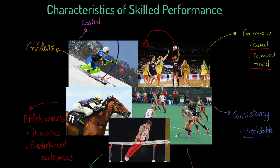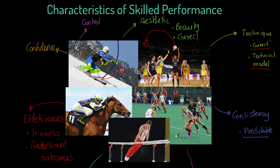This one might be less obvious: the performance must be aesthetic. What does that word mean? It could mean beauty — the performance looks good. We can see from the netball player, maybe the defender, that there's a certain kind of prowess and beauty to the performance. Again with the skier, again with the gymnast — that perfect straight line. The other point about aesthetics is that it comes back to this notion of correct. We recognize it as beautiful because it's the technical model and it's correct. We recognize the beauty of that. Those are the characteristics of skilled performance.